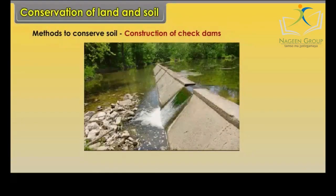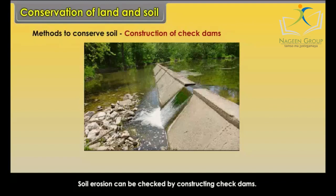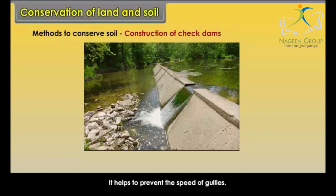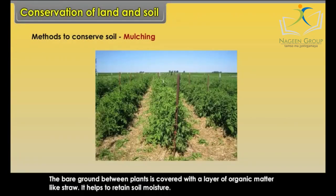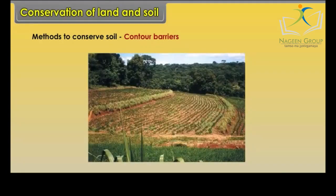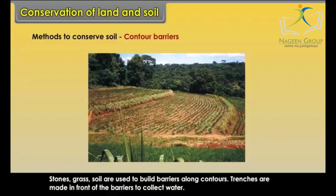Construction of check dams: soil erosion can be checked by constructing check dams, which help prevent the speed of gullies. Mulching: the bare ground between plants is covered with a layer of organic matter like straw, which helps to retain soil moisture. Contour barriers: stones, grass and soil are used to build barriers along contours, and trenches are made in front of the barriers to collect water.